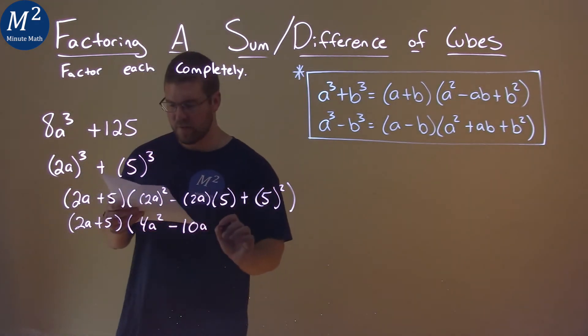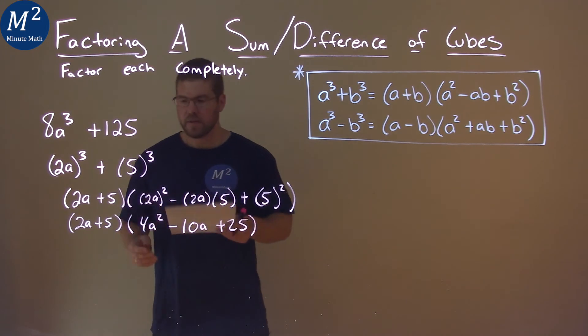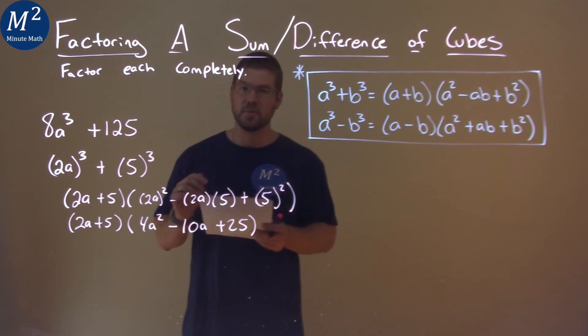We have 10a. And then 5 squared is 25. And so, our final answer here is 2a plus 5 times 4a squared minus 10a plus 25.